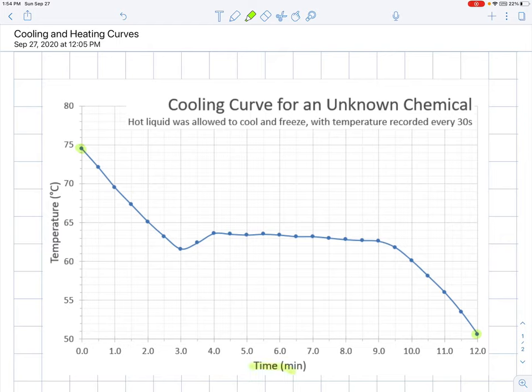The axes, the x-axis on the bottom and the y-axis on the side, they're clearly labeled. They have time and temperature, but they also have units. The times are measured in minutes and the temperature was measured in degrees Celsius.